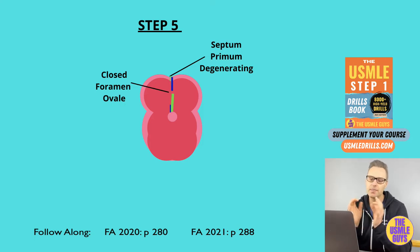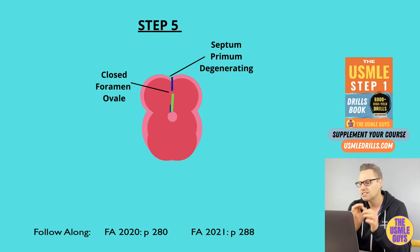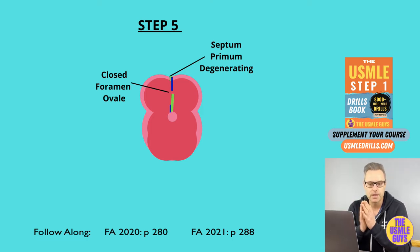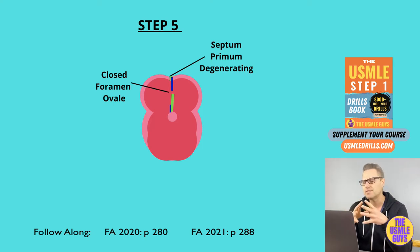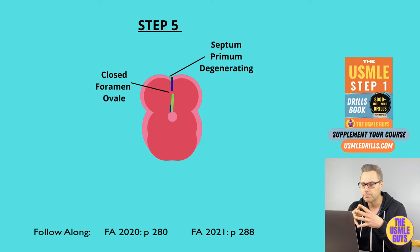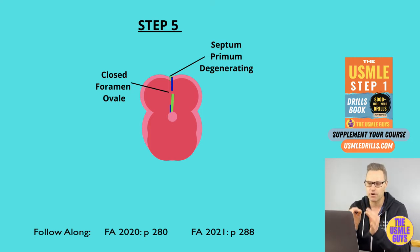At this point, the septum primum closes against the septum secundum, thus sealing the foramen ovale shortly after birth when the left atrial pressure increases and the right atrial pressure decreases. During infancy and early childhood, the septum primum and septum secundum fuse, giving rise to the atrial septum. If the septum primum and secundum don't fuse properly after birth, we get what is known as a patent foramen ovale. Most of these can be left untreated as long as they aren't symptomatic.